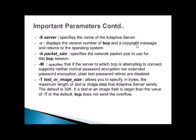The -S flag specifies the server name. -v displays the BCP version and copyright message. -A specifies the network packet size for the BCP session. -w disables plain text password retries if the server supports neither normal nor extended password encryption. The -t flag for text or image size specifies in bytes the maximum length of text or image data Adaptive Server sends — the default is 32 kilobytes. If the field exceeds this, BCP truncates it.